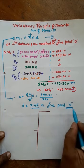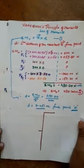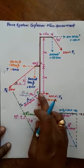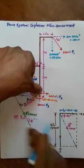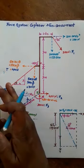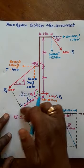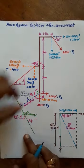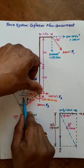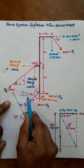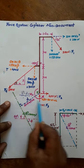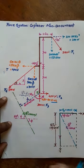We transfer the resultant R with respect to O so that it produces the anticlockwise moment. The perpendicular distance is approximately 2.45 m from O. Taking the moment of this force about the point: M = 200 × 2.45 = 490.20 N·m. This completes the problem.